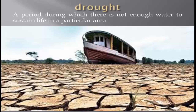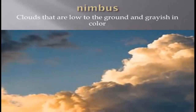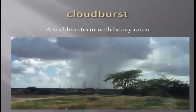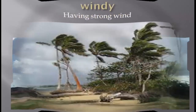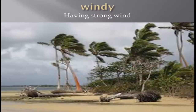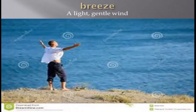Nimbus: clouds that are low to the ground and grayish in color. Cloudburst: a sudden storm with heavy rains. Windy: having strong wind. Breeze: a light, gentle wind.